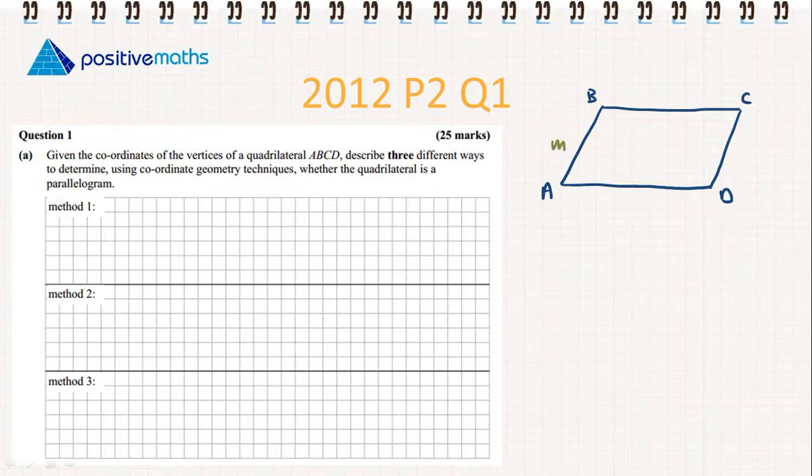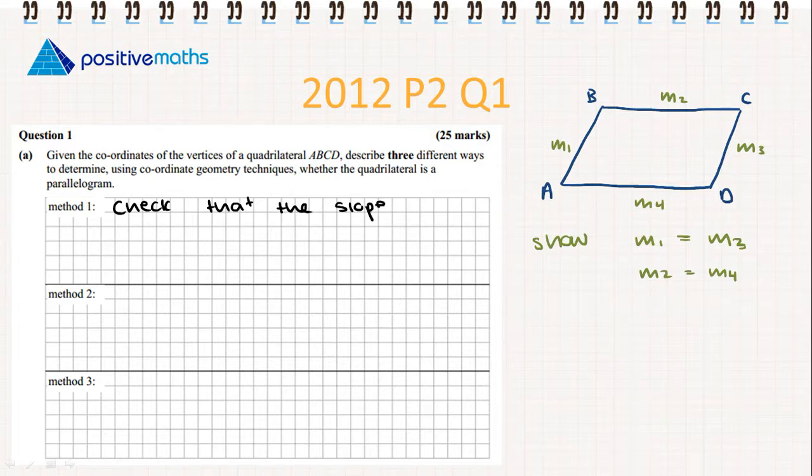I'm going to label the slope of AB as M1, the slope of BC as M2, the slope of CD as M3, and the slope of AD as M4. We want to show that slope M1 equals M3 and that M2 equals M4. So method one: check that the slopes of both pairs of opposite sides are the same.